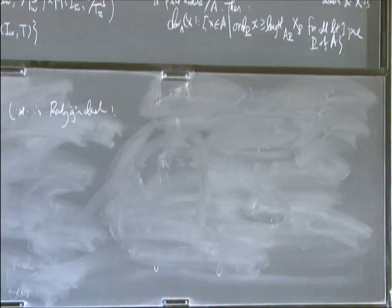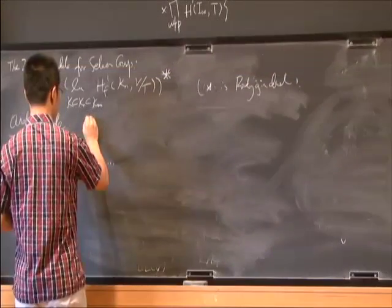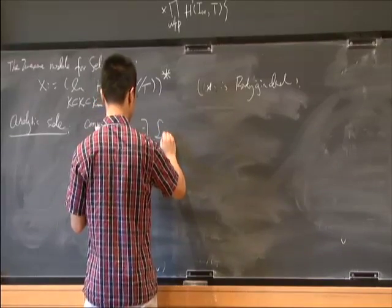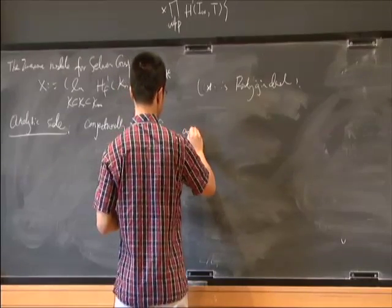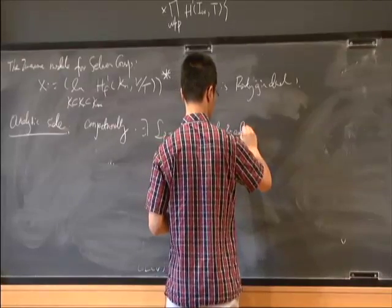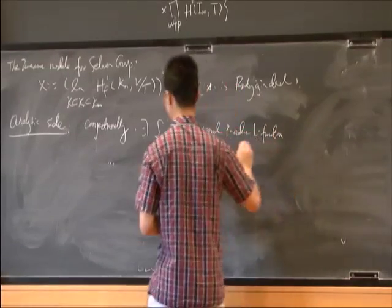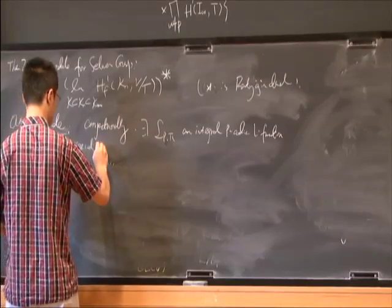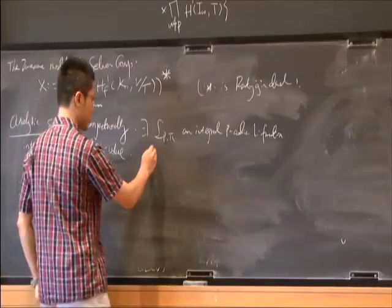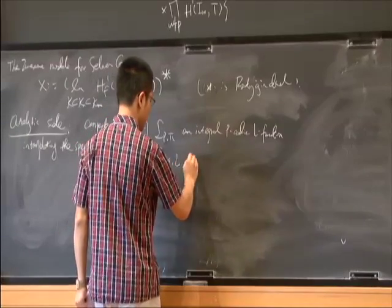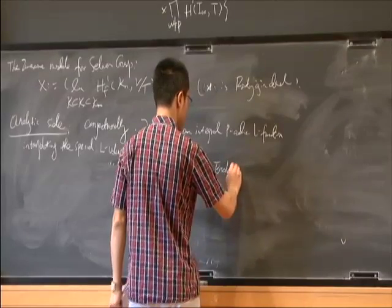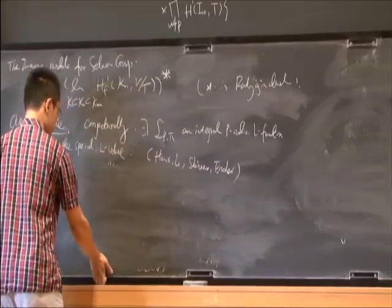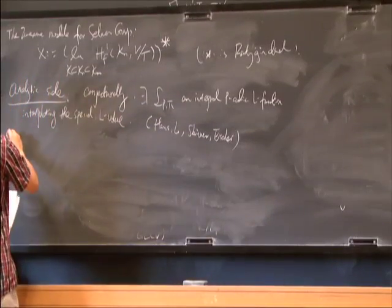On the other hand, on the analytic side, there is conjecturally, this is only conjecturally, a p-adic L-function which we denote as L_p(π), an integral p-adic L-function interpolating the special L-values. There is work of Harris, Janshu Li, Skinner, and Alain Etchegoyen constructing this element, but the p-adic L-function they construct is not integral. We need to multiply it by some congruence modules to get an integral thing, but we need some certain local Hecke algebra to be Gorenstein to have this definition. So this is only conjectural.